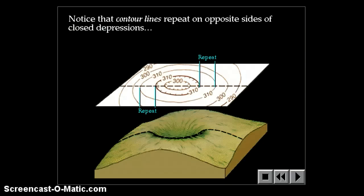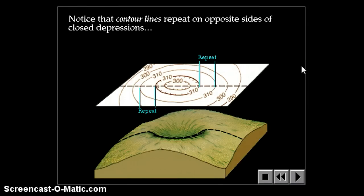Notice that the contour lines repeat on opposite sides of closed depressions. So, we have 290, 300, 310, another 310, and then dipping down to 300. Because as you were climbing, you'd go 290, 300, 310, up and over the hill, back down to 310, and then down to 300. So you have repetitions.